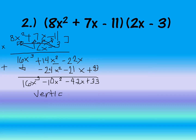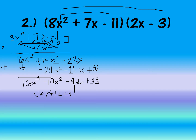That's the step-by-step vertical method. Now let's proceed to the horizontal method. For this example, we cannot apply the FOIL method because FOIL is only applicable for binomials — expressions with only two terms. Since 8x² plus 7x minus 11 has three terms, we'll use the distributive method instead.